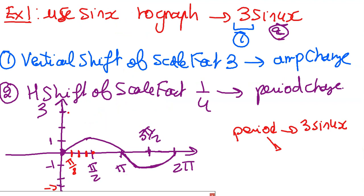Now let's move to two examples. First, I want to graph 3sin(4x) using sine x. The 3 represents a vertical stretch by a scale factor of 3 — the amplitude will change to 3. The 4 represents a horizontal compression by a scale factor of 1/4 — the period will change. The new period is 2π over 4, which gives π/2.